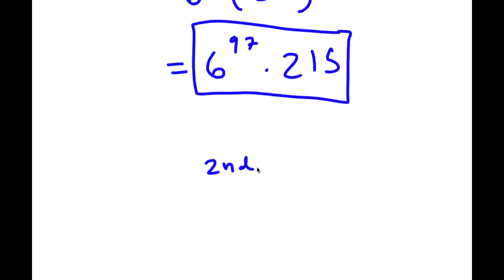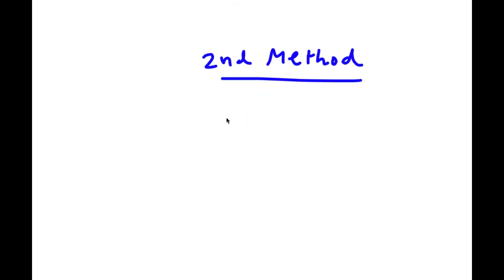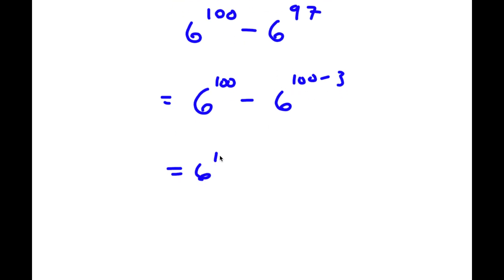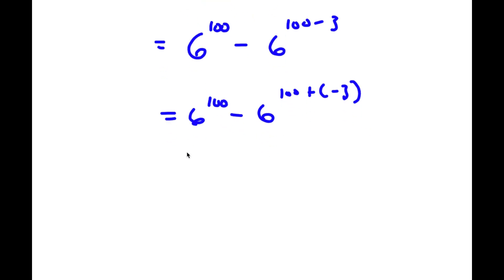I actually have a second method of solving this problem. I start with 6 to the power of 100 minus 6 to the power of 97. This time, instead of rewriting 100 as 97 plus 3, I'm going to rewrite 97 as 100 minus 3. So now I have 6 to the power of 100 minus 6 to the power of 100 minus 3. I'm going to rewrite 100 minus 3 as 100 plus negative 3, so this becomes 6 to the power of 100 times 6 to the power of negative 3.